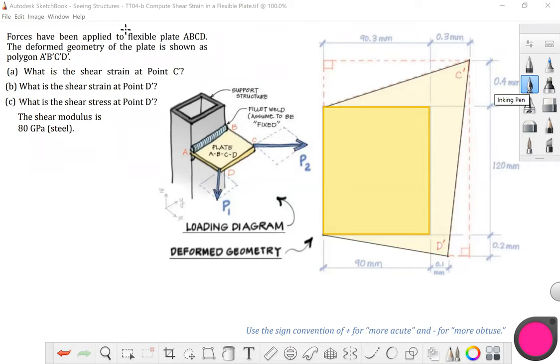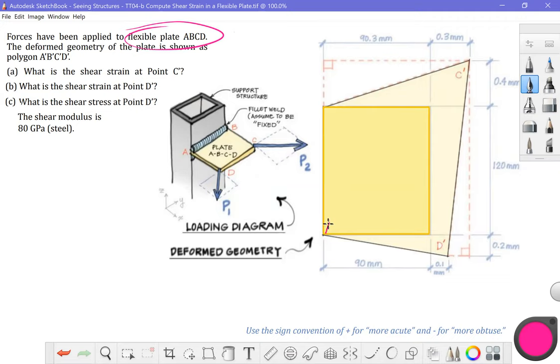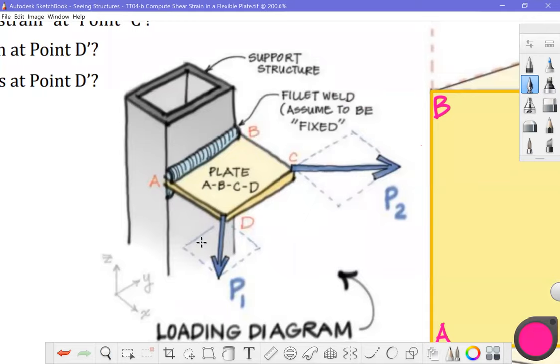In this problem, we have flexible plate ABCD. We see it in two dimensions over here. That drawing is in the XY plane. And over here, we basically can see the context in full three dimensions. So here is X, this way is Y. Flexible plate ABCD is fillet welded to some type of support structure. In other words, we're going to assume that this line that connects A and B is a line of fixity or a fixed plane.